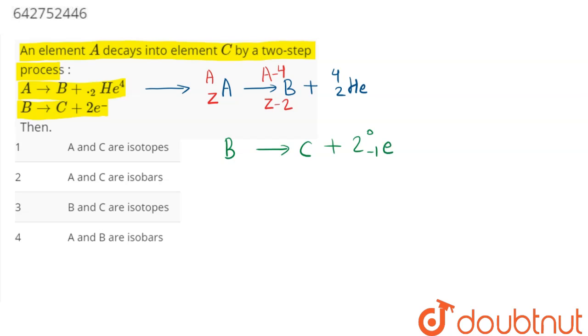So here we can see the mass number of B is A minus 4 and atomic number of B is Z minus 2. So balancing here, mass number, atomic number, this becomes A minus 4 and since this is minus 2, hence we can say that Z is the atomic number of C.